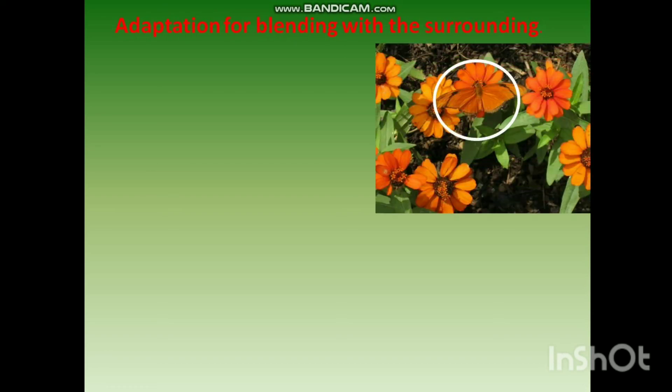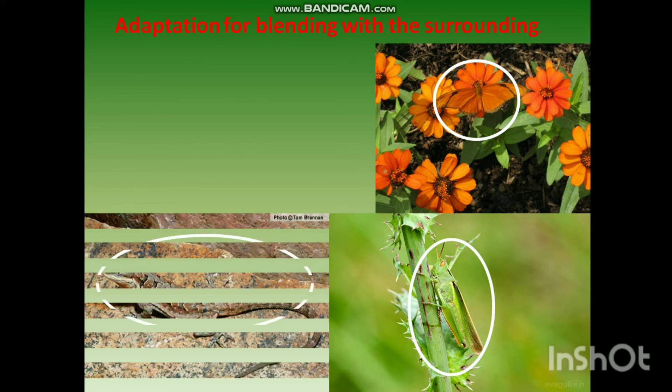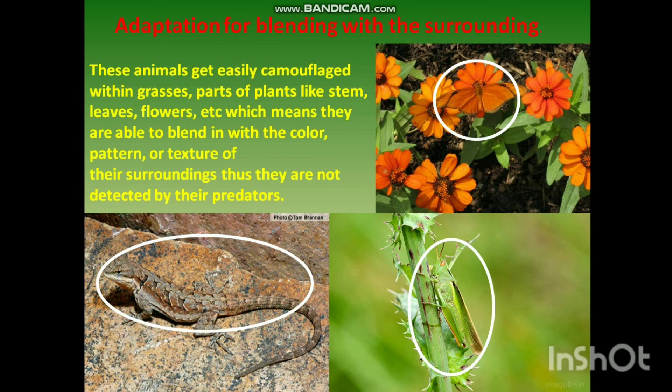Now let's move on to adaptation for blending with the surrounding. We cannot easily spot colorful butterflies, grasshoppers, and lizards. These animals get easily camouflaged within grasses and parts of plants like stem, leaves, and flowers. They are able to blend in with the color, pattern, or texture of their surroundings, and thus cannot be detected by their predators.